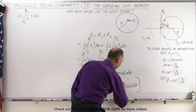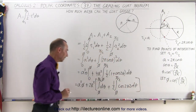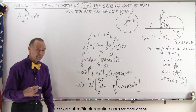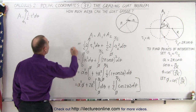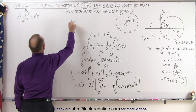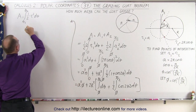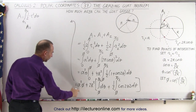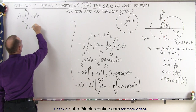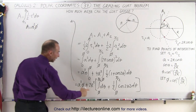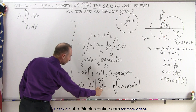Closing the bracket, we can now integrate both of those integrals. So we have the area is equal to A squared times φ.